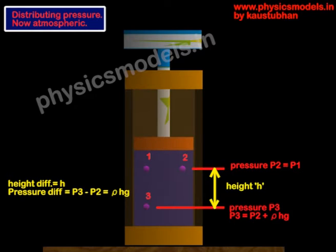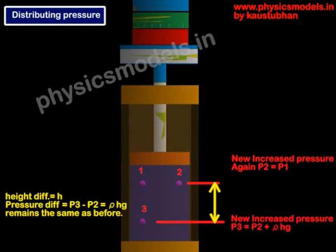Initially, on top of the piston loading platform, there is only atmospheric pressure. So p1 equals p2, as per the principle of hydrostatics — two points at the same level will have the same pressure. Point three has a liquid column above it, so relative to p1 and p2, the pressure at point three is p3 equals p2 plus ρhg, where h is the height of the liquid column. After loading, the differences did not change.